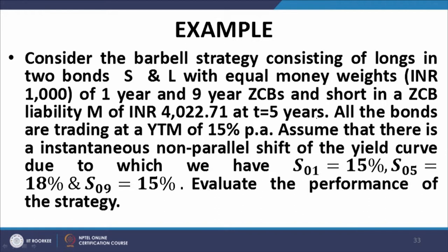If you work out the value of this liability at t equal to zero, that is today, it turns out to be exactly 2000, which is equal to the investment required for the long barbell. In other words, by shorting this particular bond of value 2000 at t equal to zero, the proceeds are deployed by investing in the barbell strategy.